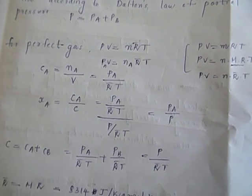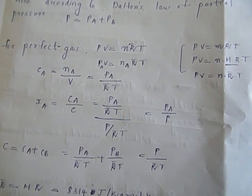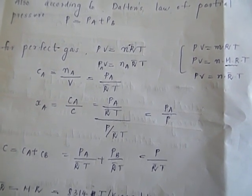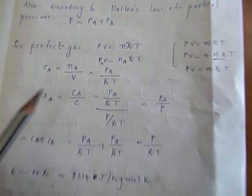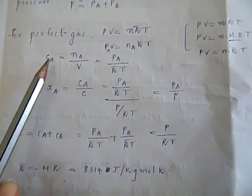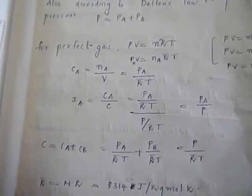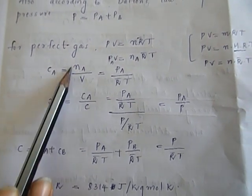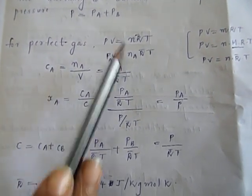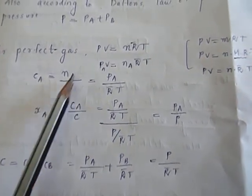Considering only one species A, P_A into V is equal to N_A into R into T. We have to consider the molar fraction C_A. Molar fraction is number of moles of A per unit volume. From this relation, we can take that N_A by V is equal to P_A by RT.